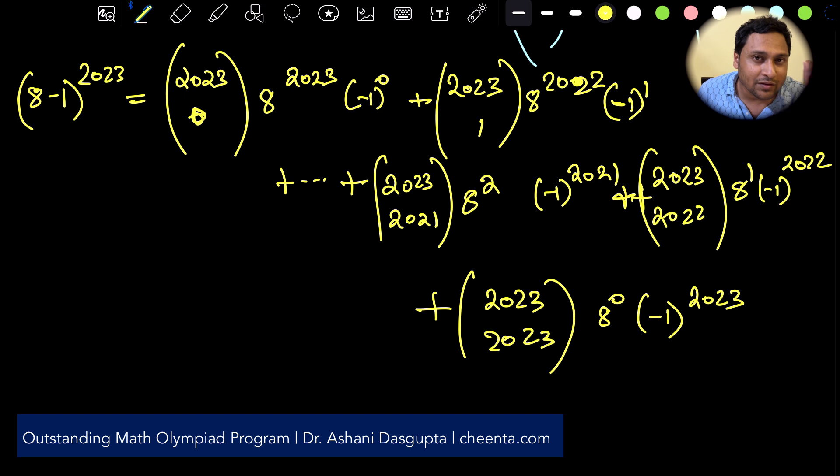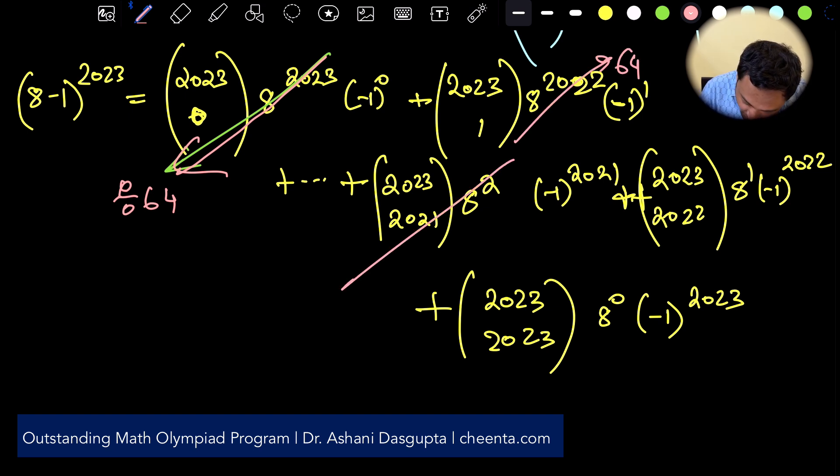Now you may think that this is over complicating the problem but in a second you will see that this actually is very very helpful. That's because each of these are actually divisible by 64 if you think about it. 64 is nothing but 8 squared so any power of 8 greater than or equal to 2, 8 squared, 8 cubed, 8 to the power 4, 8 to the power 5, up to 8 to the power 2023, all of them will be completely divisible by 64.